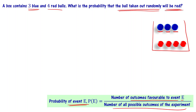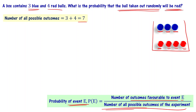Each blue or red ball drawn represents one outcome of the experiment. We have 3 blue colored balls and 4 red colored balls, making a total of 7 balls. The number of all possible outcomes is 7, since there are 7 balls in total.